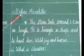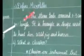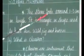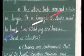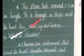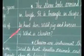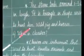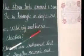Third question, define Microliths. They are stone tools around 1 to 3 cm in length. They are triangular in shape, and were used to hunt deer, wild pig, and horses.